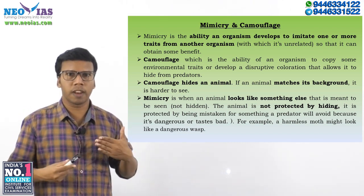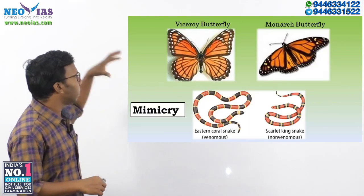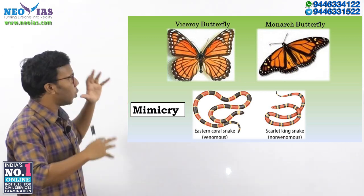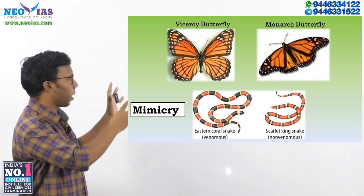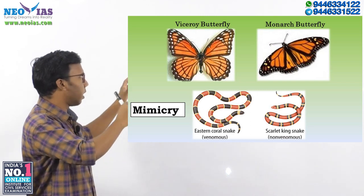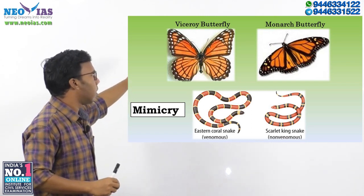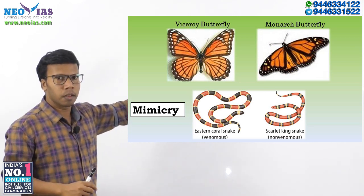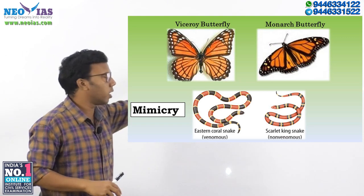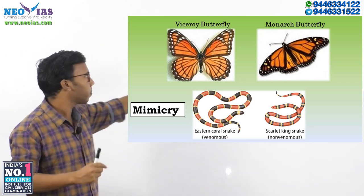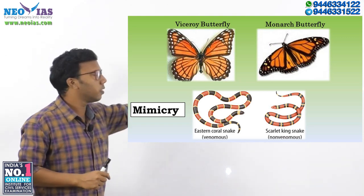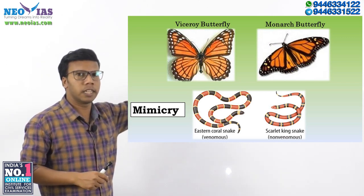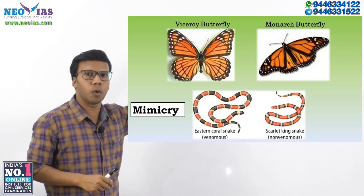I will explain mimicry with an example. In this picture you can see two types of butterflies: one is the viceroy butterfly and the second is the monarch butterfly. Both have a similar appearance — similar colors and black-and-white patterns — but these are two distinct species. However, the monarch butterfly is a poisonous butterfly, while the viceroy is not.